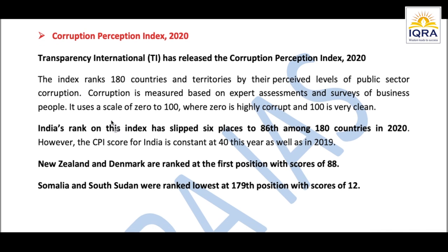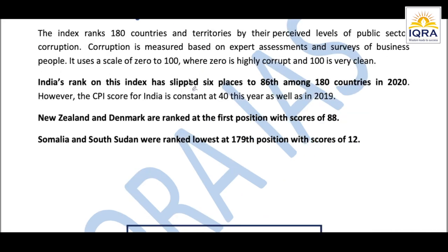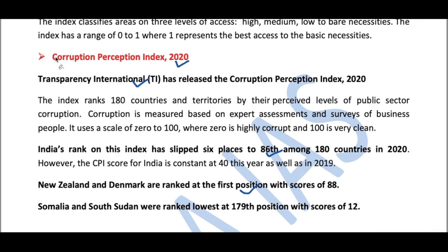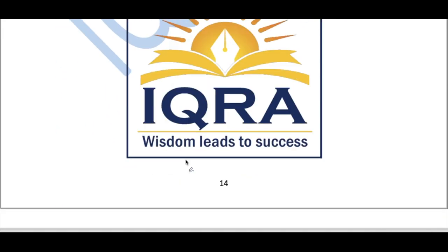The last index this week is the Corruption Perception Index, released by Transparency International — a very important organization that frequently appears in the news. India's rank slipped six places to 86 among 180 countries in 2020. New Zealand and Denmark topped the index, while Somalia and South Sudan are the lowest rankers. Two key points to remember: the Corruption Perception Index is released by Transparency International, and India's rank is 86. With this, we come to the end of our weekly current affairs. Thank you so much.